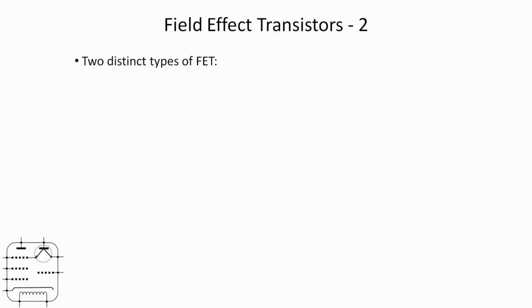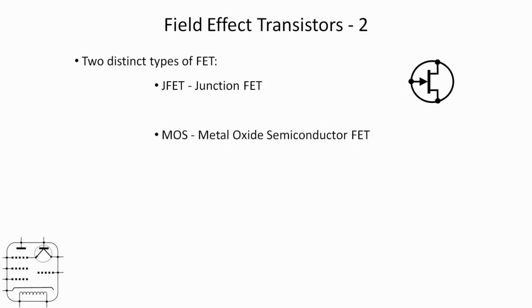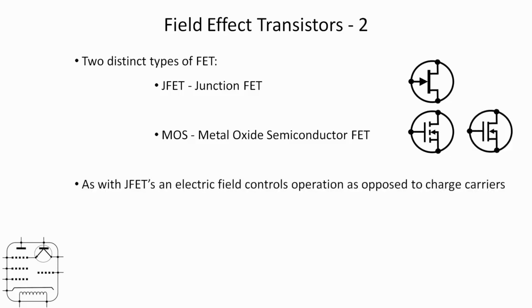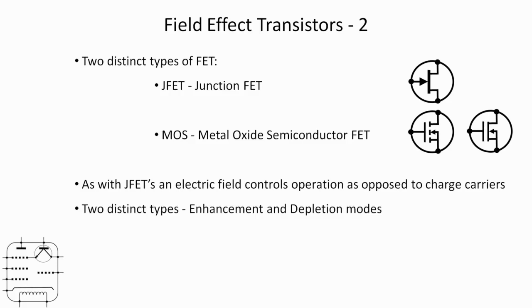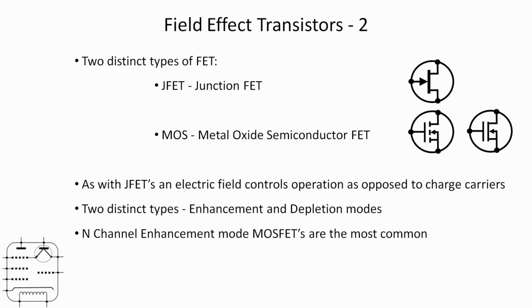There are two distinct types of field effect transistor: the junction FET, and the MOSFET or Metal Oxide Semiconductor FET. Both versions can come in enhancement and depletion mode, and as with JFETs it's an electric field that controls operation in a MOSFET, as opposed to the charge carriers. N-channel enhancement mode MOSFETs are the most common, but P-channel and depletion mode do also exist. In this video we're going to focus on the N-channel enhancement mode.